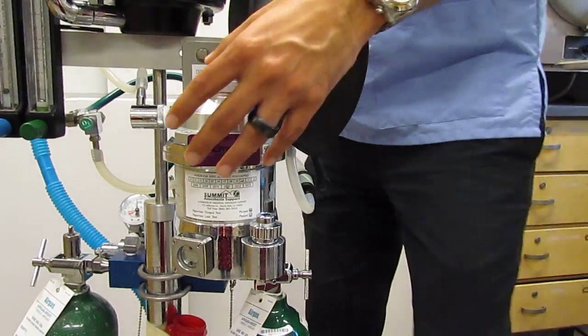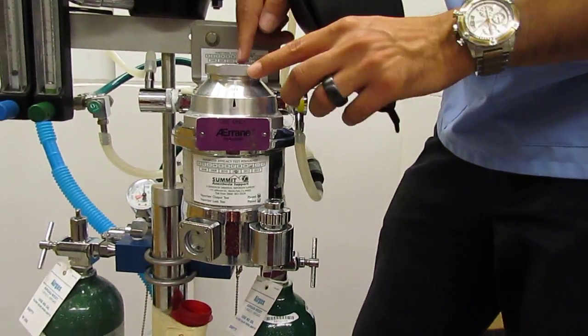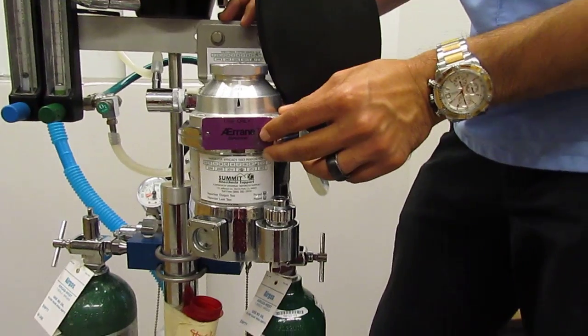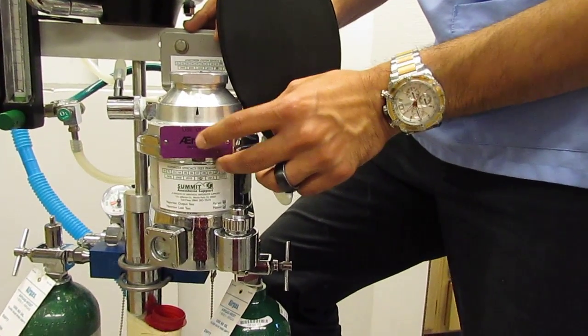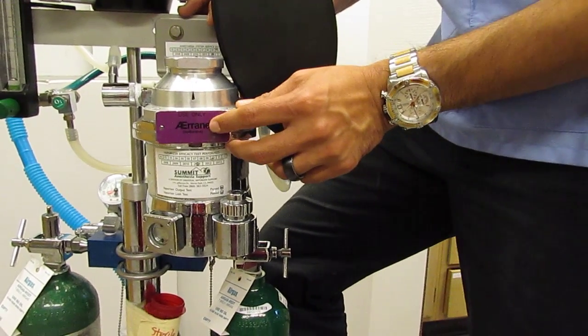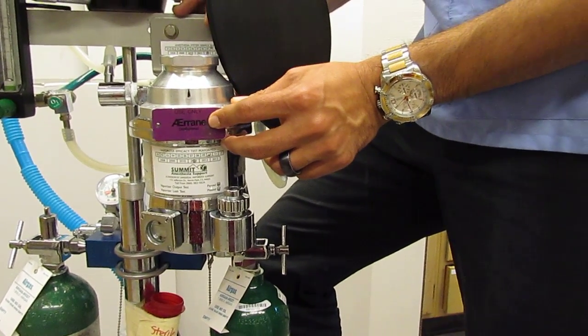Remember what we talked about in lecture? The precision vaporizer is a specialized device calibrated to be used specific to a certain machine and it's specific to that, I'm sorry, to a certain gas, and it's specific to that gas's vapor pressure, okay?